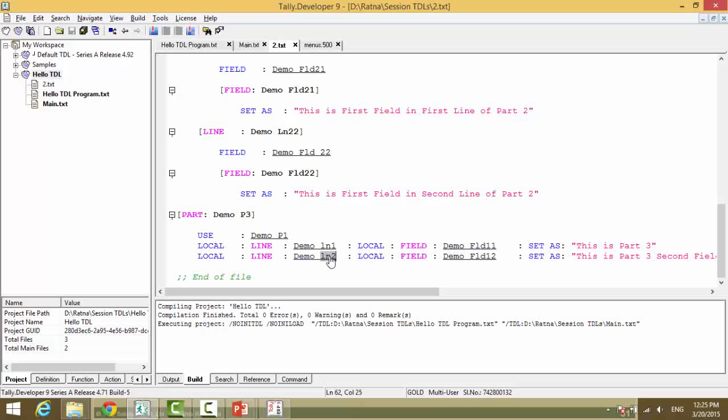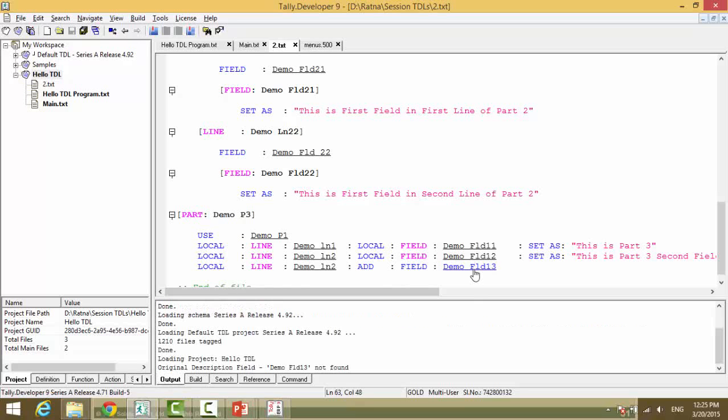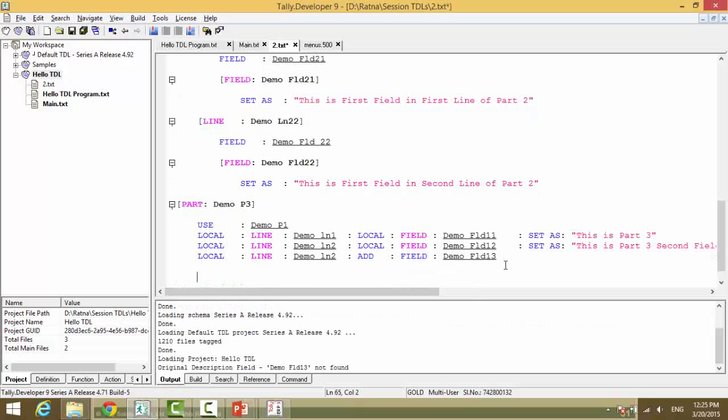Now say to this line you want to add one more field. So what we can do is locally to this line add a field. And the field name is demo FLD 13. Now does this field definition exist? No. So what we will have to do is we will define this field.